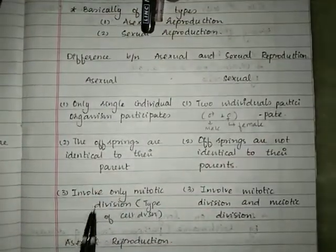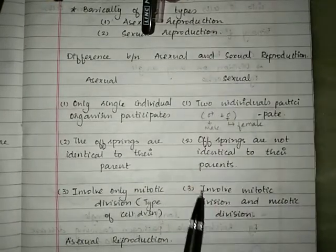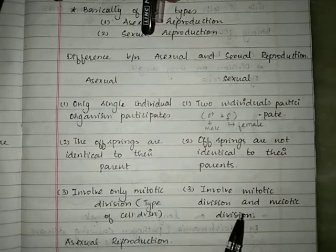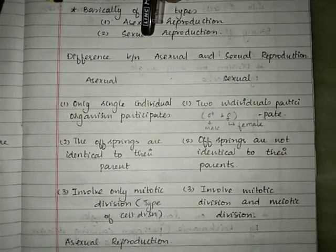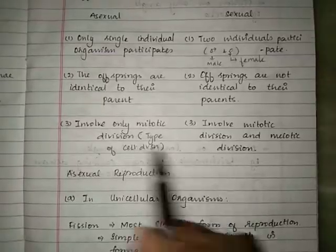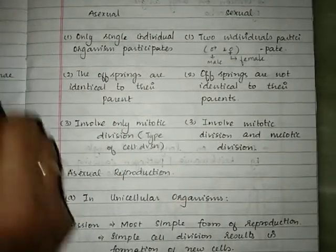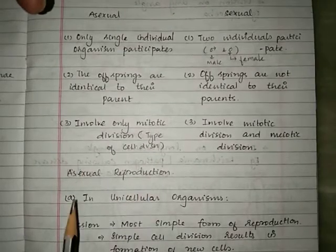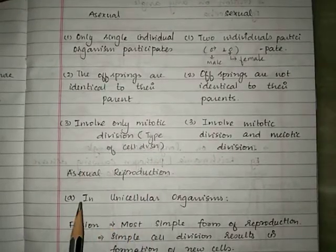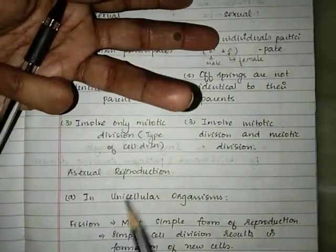Asexual reproduction involves only mitotic division, whereas sexual reproduction involves two types of cell divisions: mitosis and meiotic division. These are the basic differences between asexual and sexual reproduction. Now we will start with the process of asexual reproduction and see different types occurring in different groups of organisms.